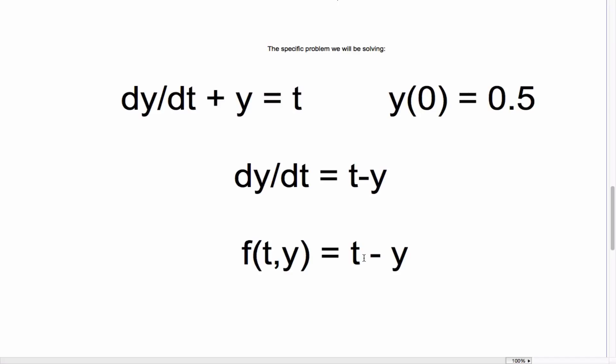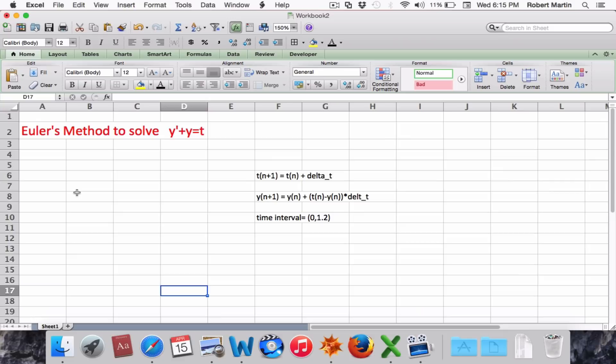Now, let's go to Microsoft Excel and see how to solve this. Okay, Euler's method to solve y' + y = t. I begin by assigning the delta t value to a specific cell. So delta t is equal to, and we're going to choose 0.1 for our initial delta t value.